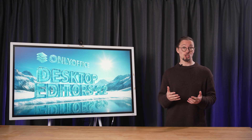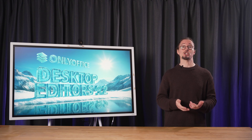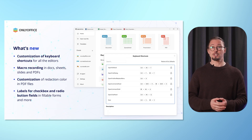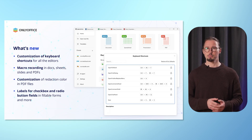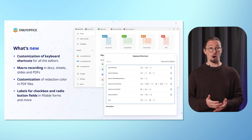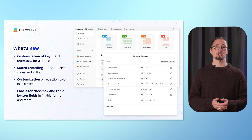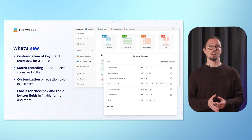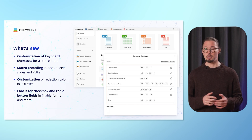Now let's turn our attention to the updated desktop version — OnlyOffice Desktop Editors 9.2. As always, the newest version for Windows, Linux and macOS comes equipped with the majority of new features and improvements. In particular, version 9.2 offers: customization of keyboard shortcuts for all editors, macro recording in Docs, Sheets, Slides and PDFs, customization of redaction color in PDF files, and labels for checkbox and radio button fields in fillable forms — and more.